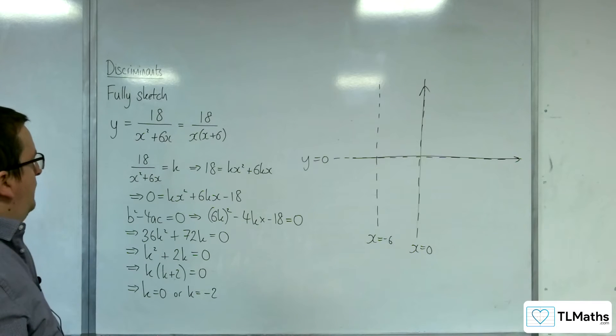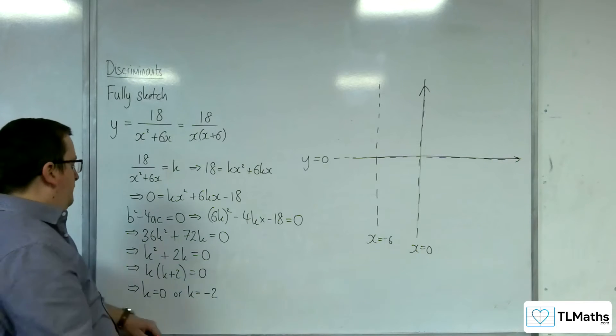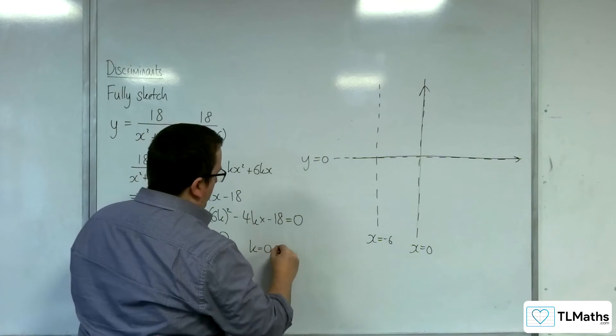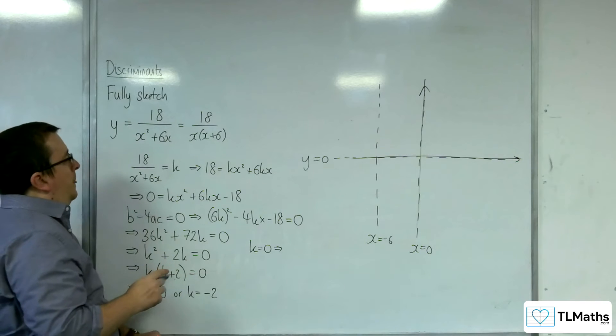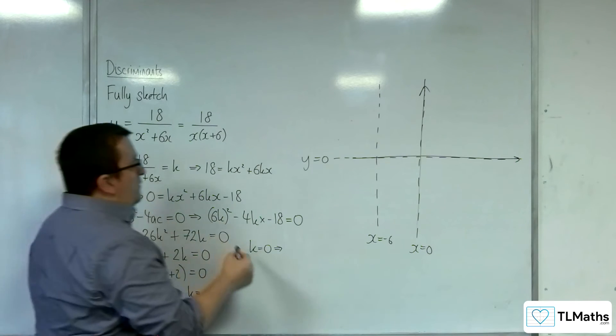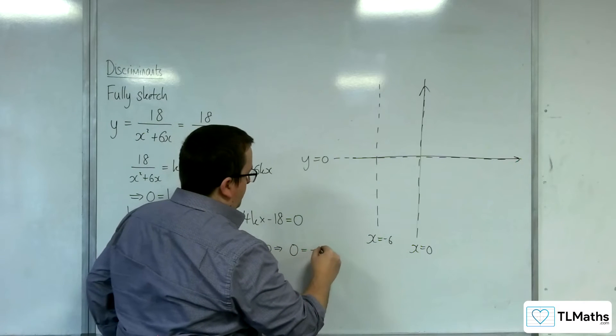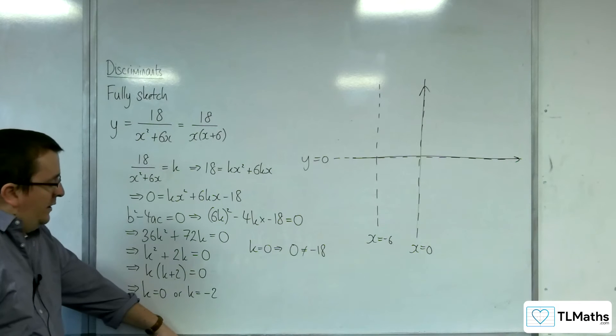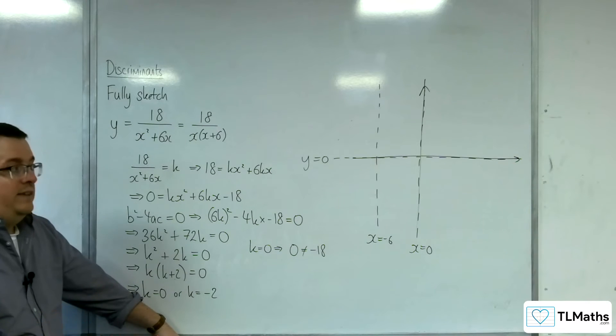Now, if k is equal to 0, then that implies that this equation would become 0 equals minus 18, which clearly it doesn't. So k equals 0 isn't giving me anything.